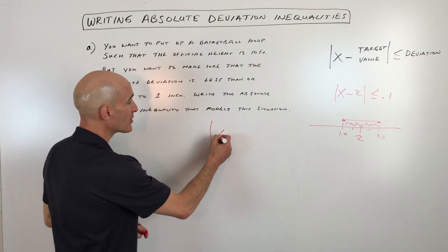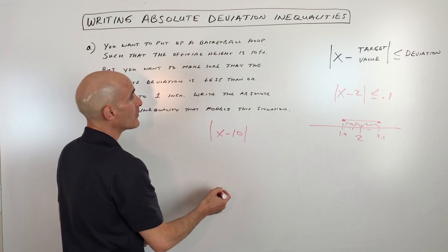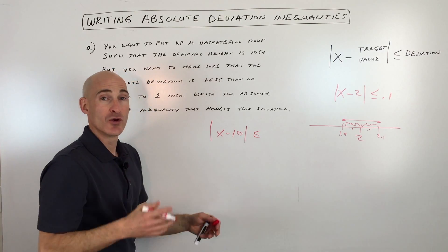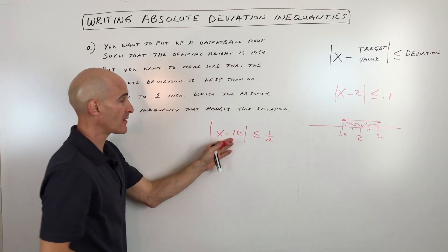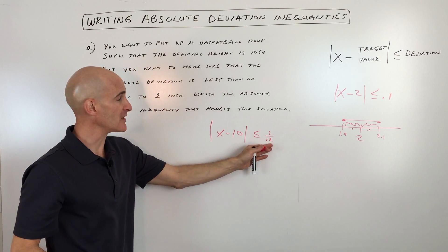So what we would do, our target is 10 feet, but we want it to be no more than off by one inch. Now, one inch is one twelfth of a foot. So since I'm writing this in terms of feet, I'm going to put one inch in terms of feet.